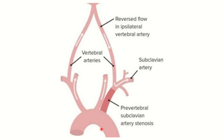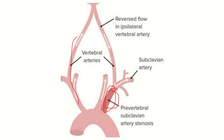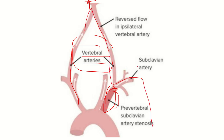Looking at this anatomical picture, the aorta gives rise to the brachiocephalic artery, left common carotid artery, and left subclavian artery. We can see there is a stenotic area in the subclavian artery proximal to the vertebral origin. When there is stenosis of the left subclavian artery, the left side of the body does not get adequate blood supply. The right vertebral artery carries blood to the brain, and through the vertebrobasilar system the vessels connect, allowing blood to flow back to the left side.